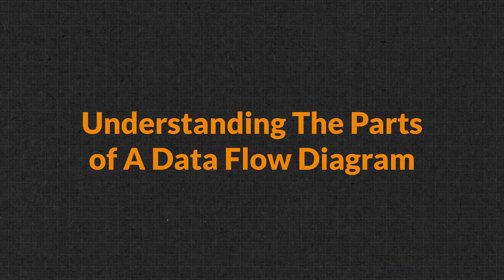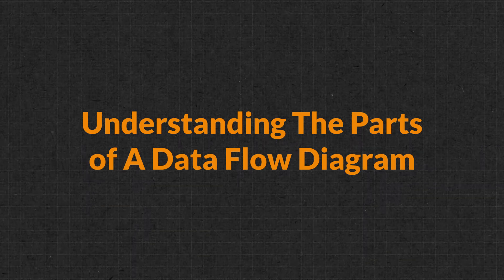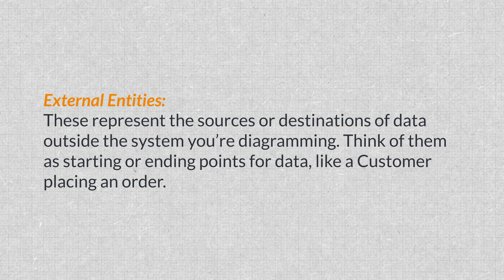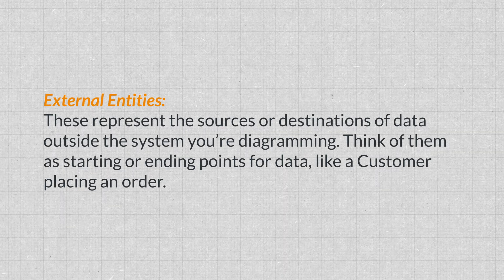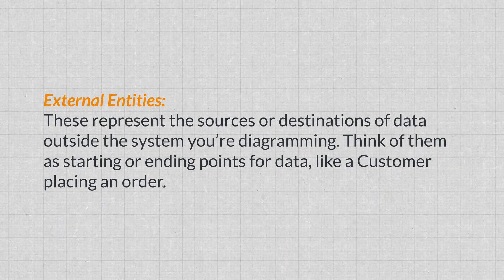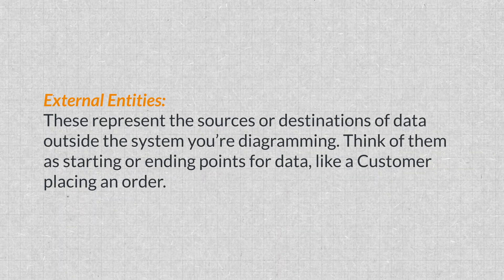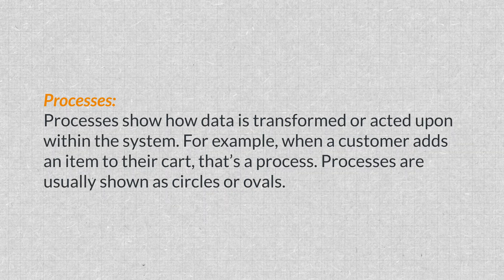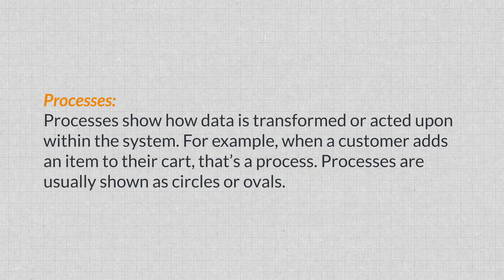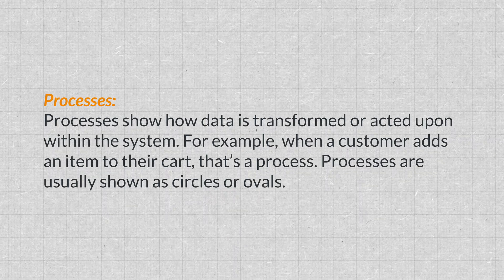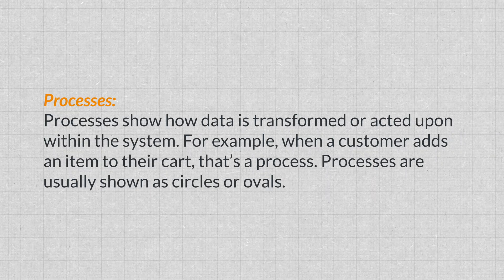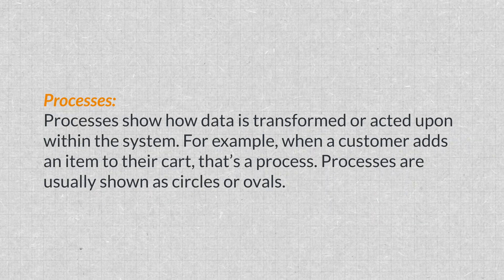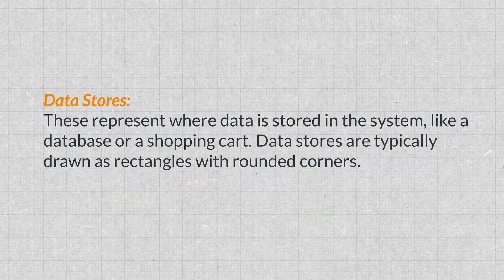Now you've got access to standardized shapes including external entities, processes, data stores, and data flows. Before we start building, let's quickly go over the keys of a data flow diagram. There are only four main elements to keep in mind and they're pretty straightforward. External entities represent the sources or destinations of data outside the system — think of them as a starting or ending point for data, like a customer placing an order.